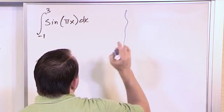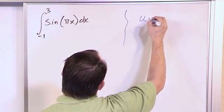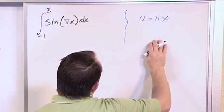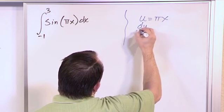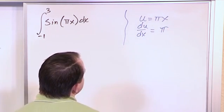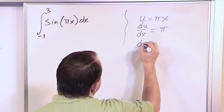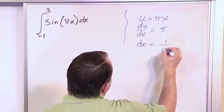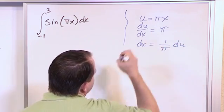So let's put it into a form that we know. So u will be pi times x, right? So then du/dx will just be equal to, take this derivative, we just get pi. So then dx will just equal 1 over pi du, just solving for dx.